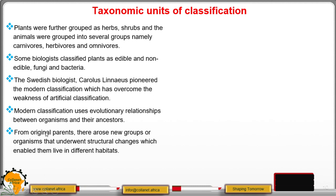From the original parents, there arose new groups or individuals that underwent structural modification, what we call evolution, enabling them to live in different habitats. It is believed that the modern-day continents were once a single landmass, but because of changes called continental drift, the world split into the current continents. Organisms occupied various continents and in those regions they underwent modification to occupy different habitats. We shall discuss this further in the topic of evolution.